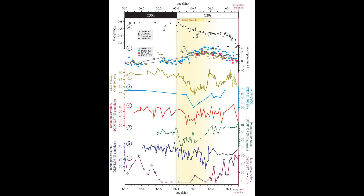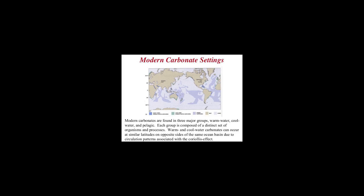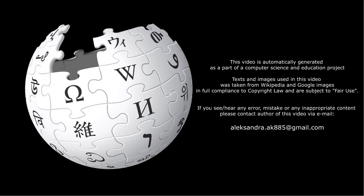Calcareous plankton and sediment particles can be found in the water column above the CCD. If the seabed is above the CCD, bottom sediments can consist of calcareous sediments called calcareous ooze, which is essentially a type of limestone or chalk. If the exposed seabed is below the CCD, tiny shells of calcium carbonate will dissolve before reaching this level, preventing deposition of carbonate sediment.